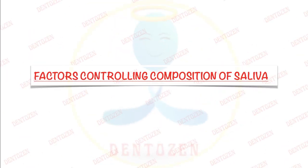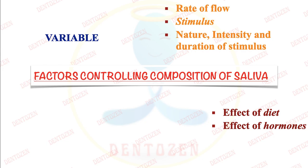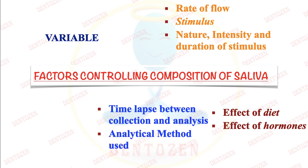Now let's see the factors which control the composition of saliva. We've seen what is in saliva — water, organic and inorganic solids, and gases — but these don't always stay in the same amount; they are variable. Factors that can control composition include rate of flow, nature and intensity of the stimulus, time of day, diet, hormones, the time lapse between collection and measurement, the method used, and circadian rhythm.